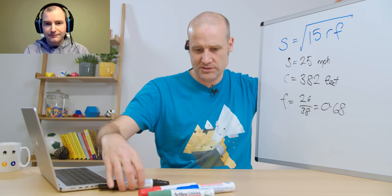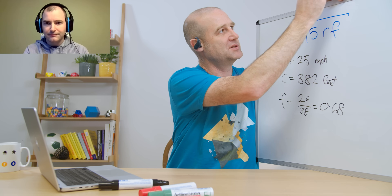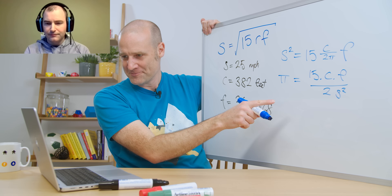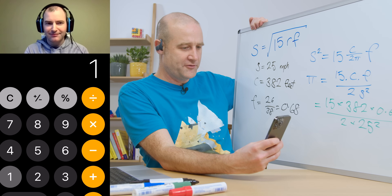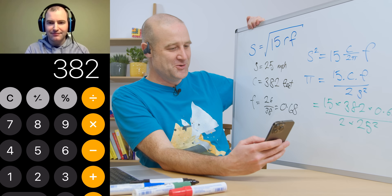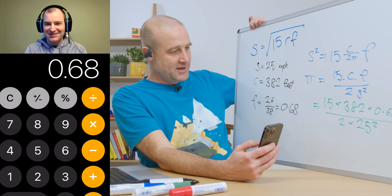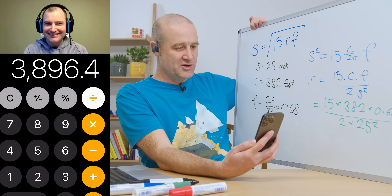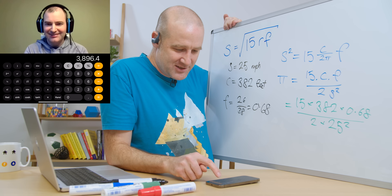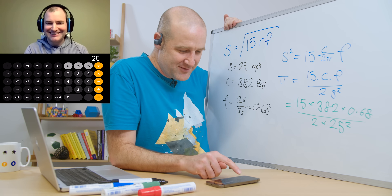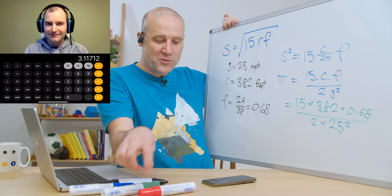We're going to rewrite everyone's favorite equation in a way that spits pi out a bit more easily, put our values in, and get this Pi Day's value of pi. Moment of truth: 15 times 382 times 0.68 divided by 2 times 25 squared, in scientific mode, in brackets — equals 3.117.